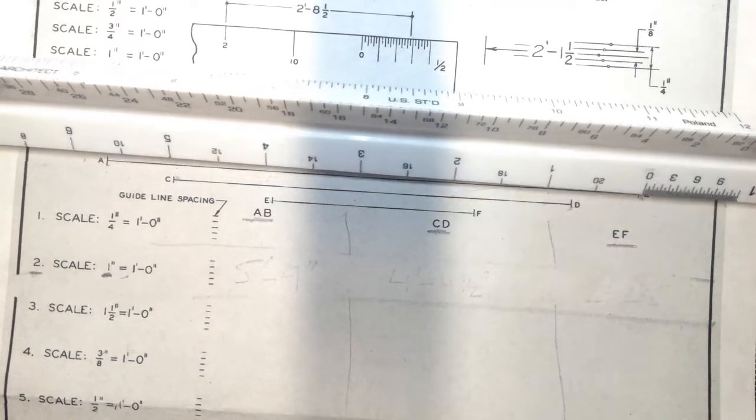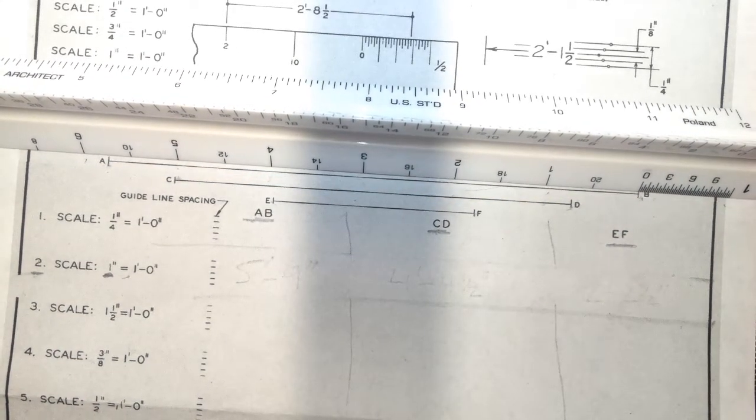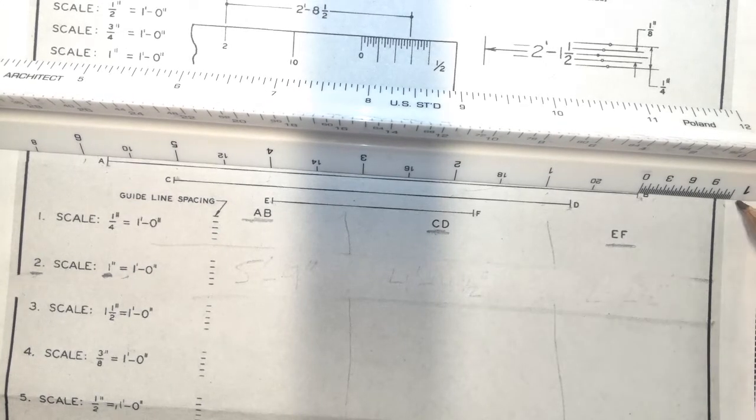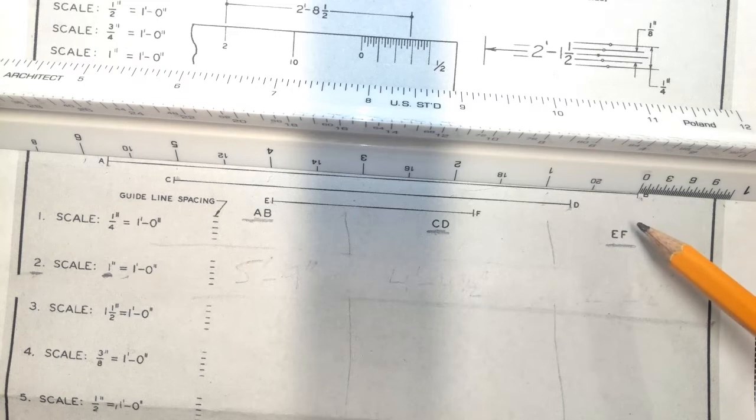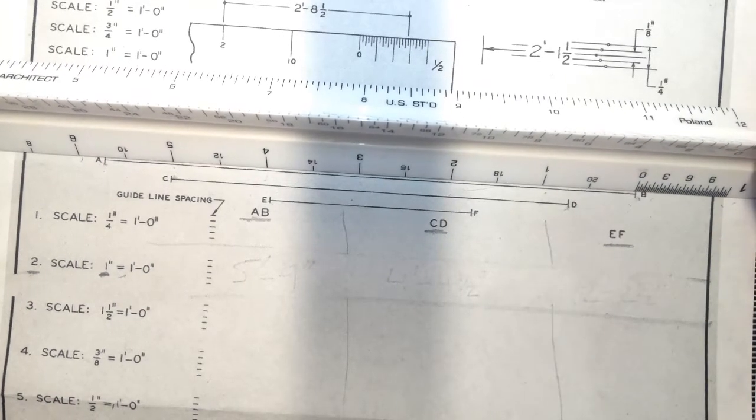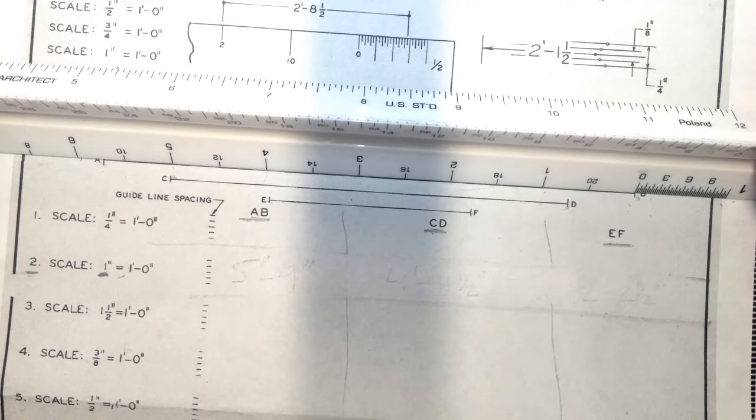So 1 inch equals 1 feet and that's the zero. The zero is going to be placed on the line, which is the third step. So first is identify where 1 inch equals 1 feet. Second step was to identify where the zero is. And then third is to place the zero directly on top of one of the points that you're going to be measuring from.